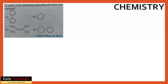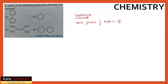Welcome to this video. The question is: in which of the following molecules are all atoms coplanar? Coplanar means all atoms are in one plane. This is possible only when hybridization is sp2 or sp, because sp2 means trigonal planar — three atoms arranged in a plane.